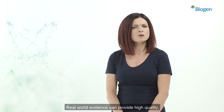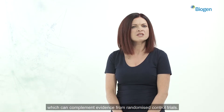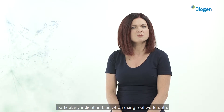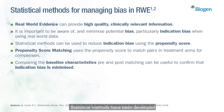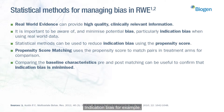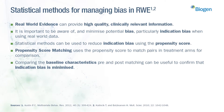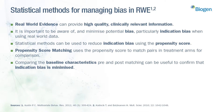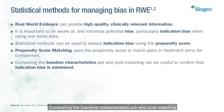Real-world evidence can provide high quality, clinically relevant information which can complement evidence from randomised control trials. However, it is important to be aware of and minimise potential bias, particularly indication bias, when using real-world data. Statistical methods have been developed that aim to adjust for multiple types of bias. Indication bias can be reduced using the propensity score. Propensity score matching uses the propensity score to match pairs in treatment arms for comparison, and the matched cohort should have the same distribution of propensity scores. Comparing baseline characteristics pre- and post-matching can confirm that indication bias is minimised.